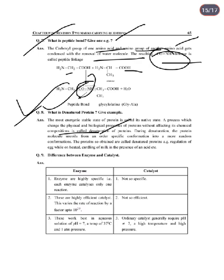During denaturation, the protein molecule unfolds from its ordered specific conformation into a random conformation. The protein so obtained is called a denatured protein. Examples: denaturation of egg white on heating, curdling of milk in the presence of acid.